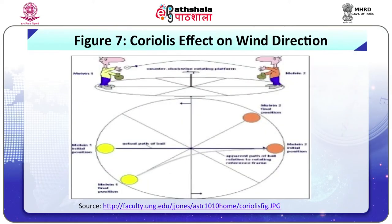Suppose two children are standing on a rotating disk. When the disk is still, the ball thrown by one reaches exactly to the other. Once the disk is in rotation, one child — say, Melvin 1 — throws a ball to the other child, Melvin 2. You can refer to figure number 7 for this example.